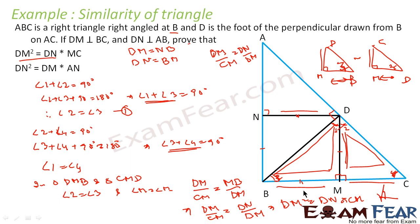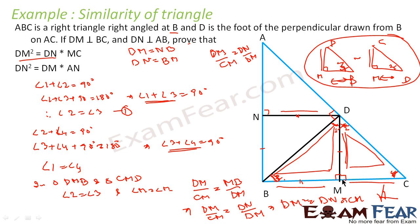So, very simply: we assumed DM equals NB from the parallelogram. We took the two relevant triangles and were supposed to prove DM squared equals DN into MC. We labeled angles 1, 2, 3, 4, formed equations, and found that angle 2 equals angle 3. Since one angle is 90 degrees and angle 2 equals angle 3, the two triangles are similar. With similar triangles, sides are proportional, giving DM square equals DN into MC.